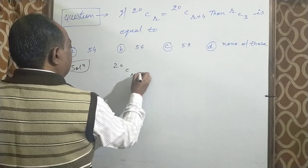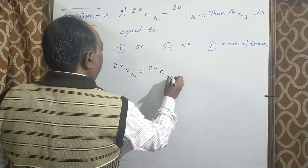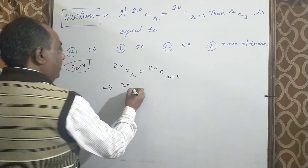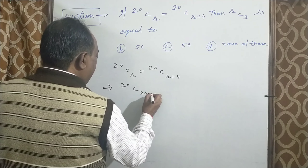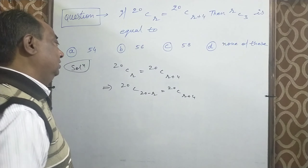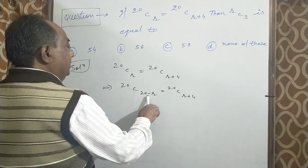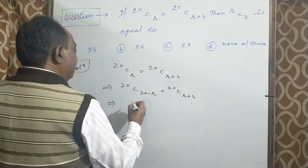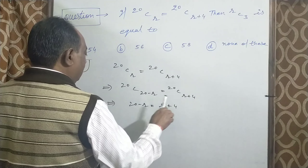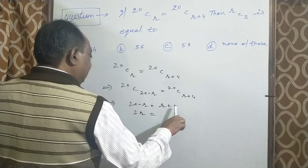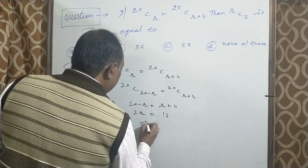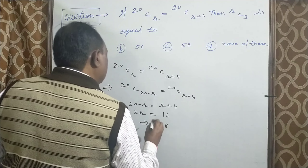Solution: 20CR equal 20C(R+4)। Combination के formula के अनुसार, 20C(20 minus R) equal 20C(R+4) में convert कर सकते हैं। अब 20 equal होने के कारण equating करते हैं: 20 minus R equal R plus 4। R को right side में ले जाने पर 2R equal 16, तो R की value 8 होगी।